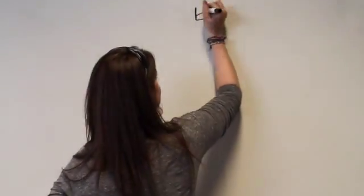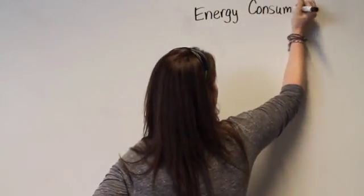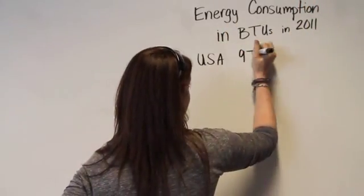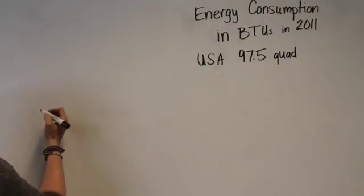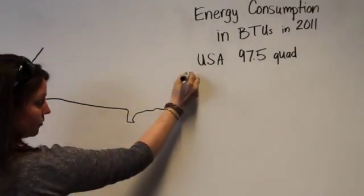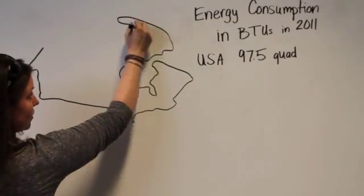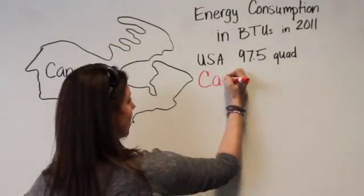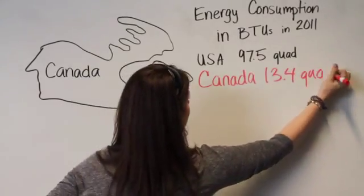Canada is one of the world's five largest energy producers and is the largest foreign supplier of energy to the United States. It is a net exporter of electricity to the U.S., but most of their power needs are met by hydroelectricity, a renewable resource. Canada used 13.495 quadrillion BTUs of primary energy in 2011.